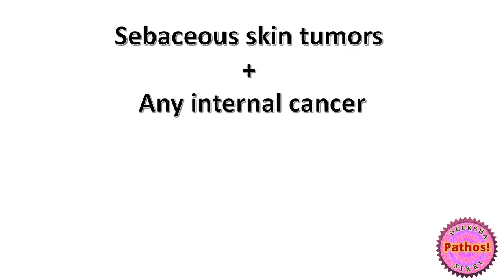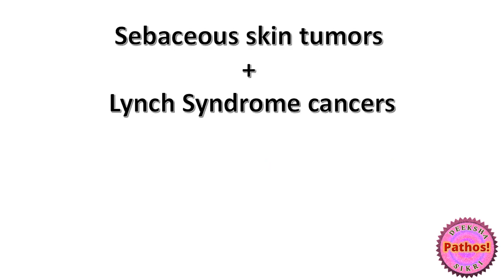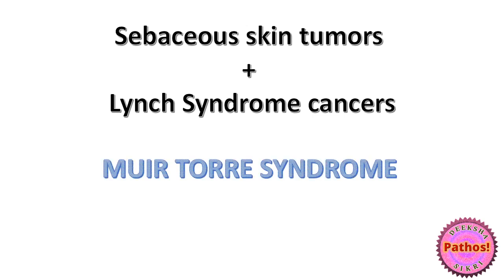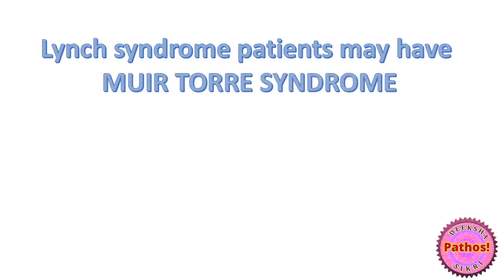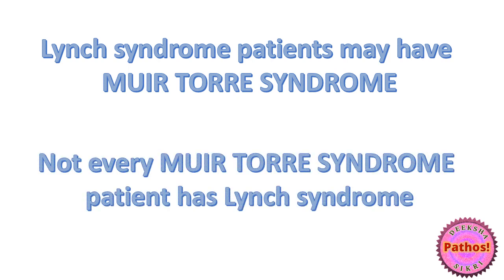One more term: if a patient has sebaceous skin tumors in addition to any internal cancer, this combination is called Muir-Torre syndrome. If those internal cancers are Lynch syndrome cancers, you still call it Muir-Torre syndrome. But my point is that Lynch syndrome patients may have Muir-Torre syndrome, but not every Muir-Torre syndrome patient has Lynch syndrome. Muir-Torre can be a variant of Lynch in which sebaceous skin tumors are also present.